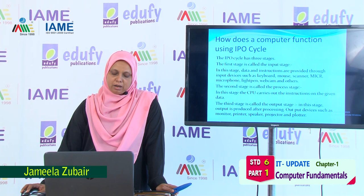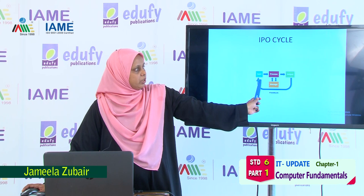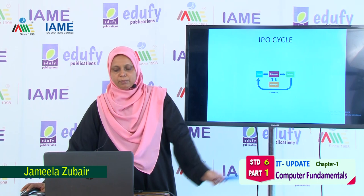So a computer functions using an IPO cycle. This cycle has three stages: input stage, processing stage, and output stage. This is a figure of the IPO cycle — input, then processing, then output. The output can again be fed back as input, and the CPU also stores some data inside it.